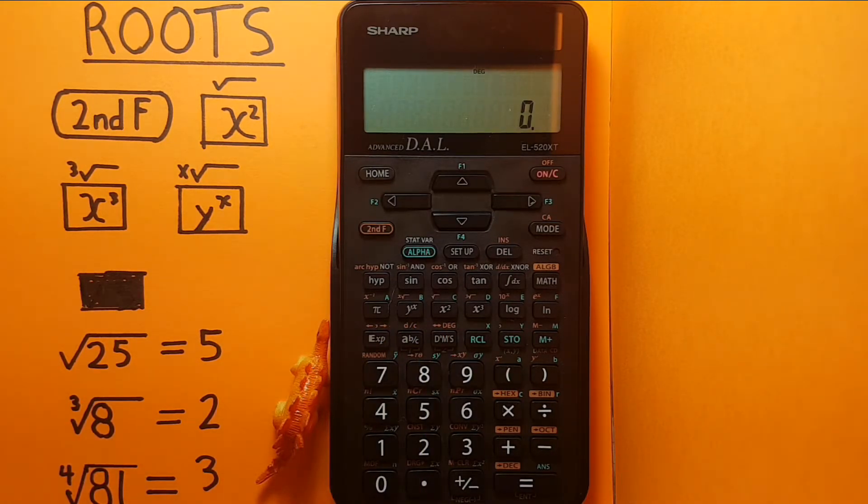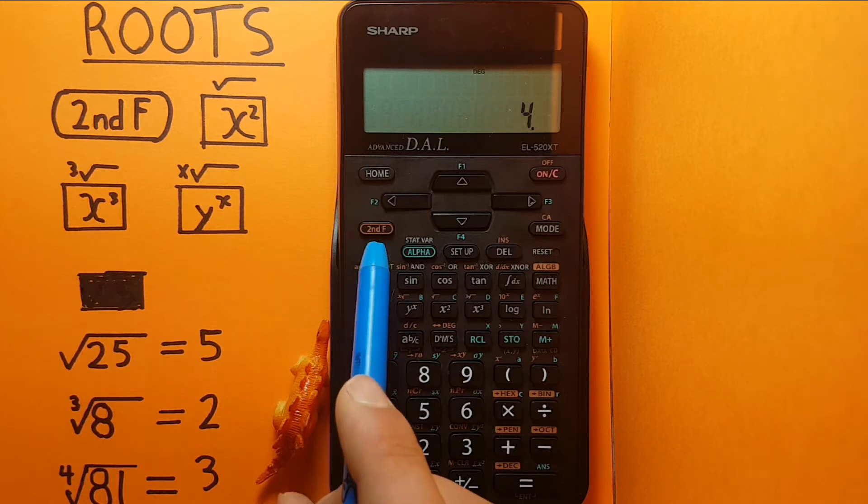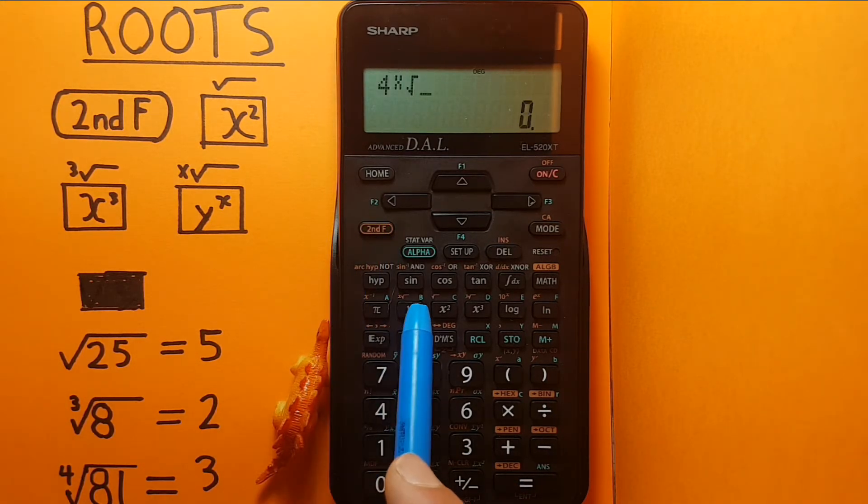We start by entering the root value. So if we want to find the fourth root of 81, we type 4, and second function y to the x.